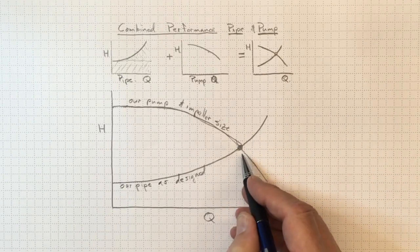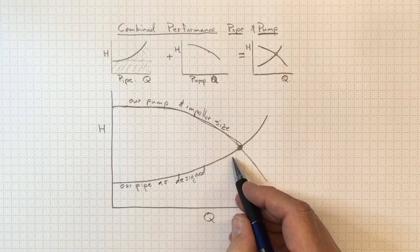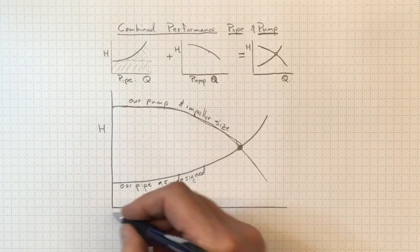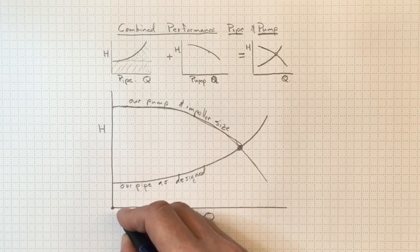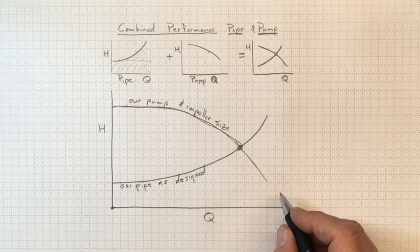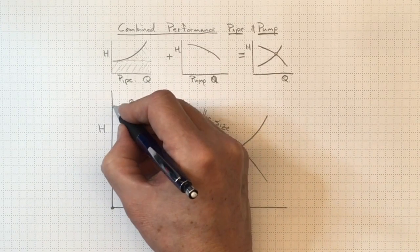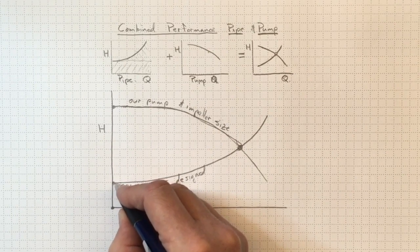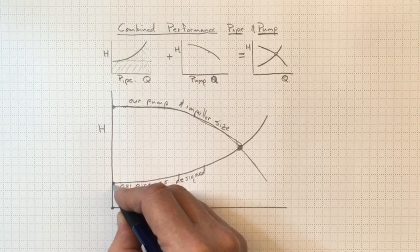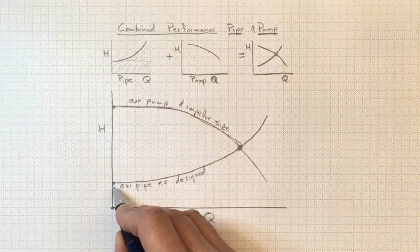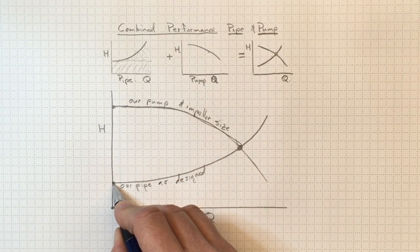Now let's think about this system. It's turned off to start with, and there's a check valve so there's no flow going backwards. So we start off with zero flow and we switch on the pump. The pump spins up to speed and now the pump is producing this much head and there's no flow in the piping system. So that's the back pressure from the elevation.